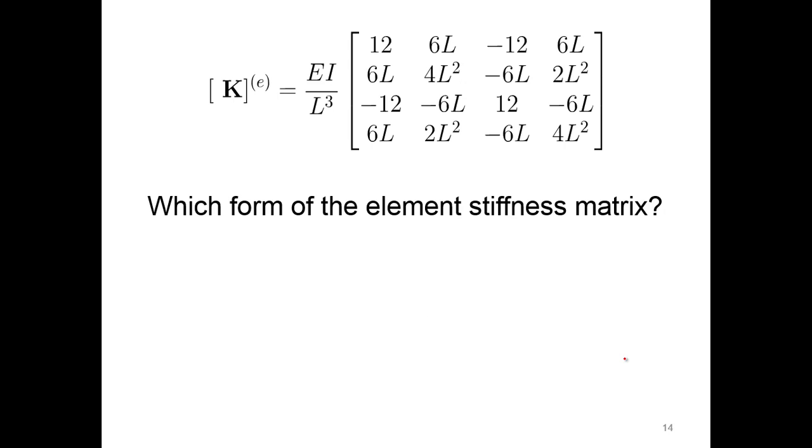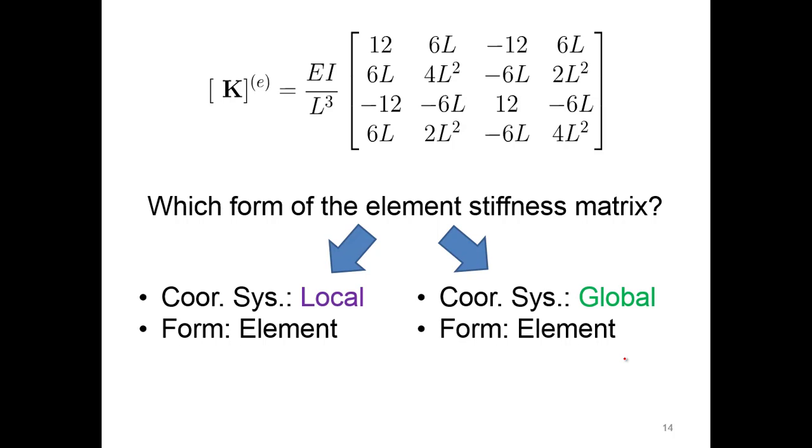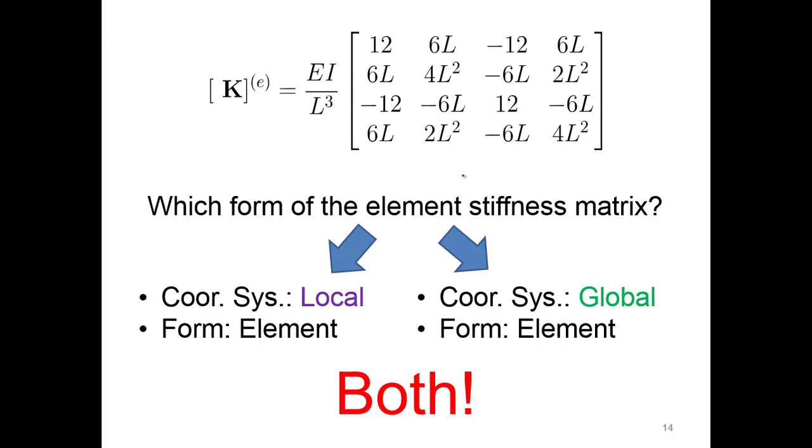By the way, which form of the element stiffness matrix is this? We kind of hinted at it already. We said the coordinate system—obviously we started in local coordinates, and the form is clearly in elemental form. Or is it in global coordinates in elemental form? It's actually both. It's clearly in local coordinates because that's where we initially defined it, and you can see we've got a capital K up here, so that kind of gives it away as being global.